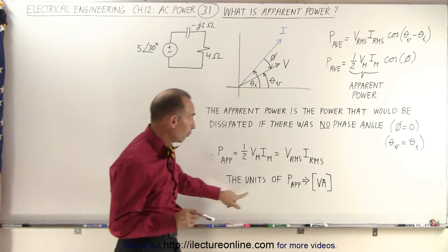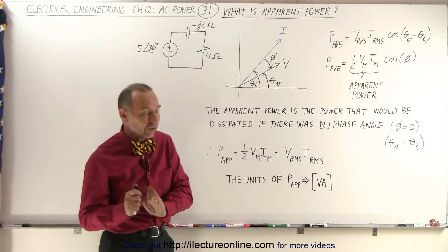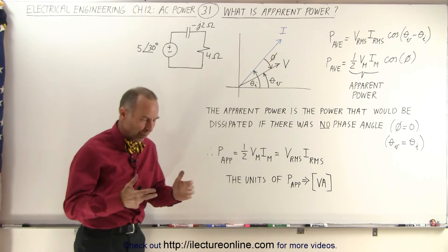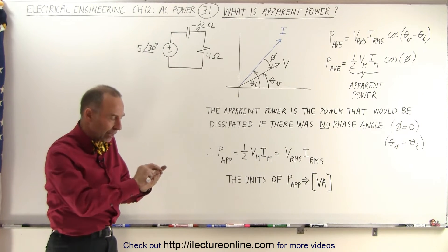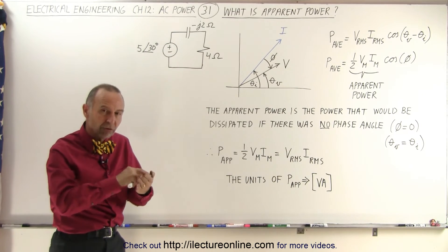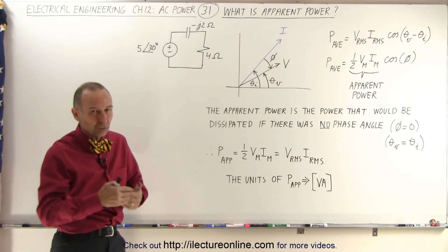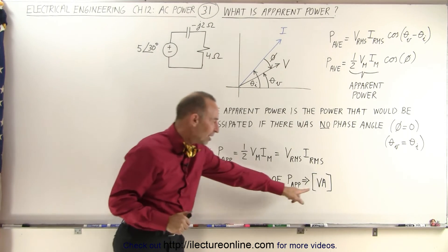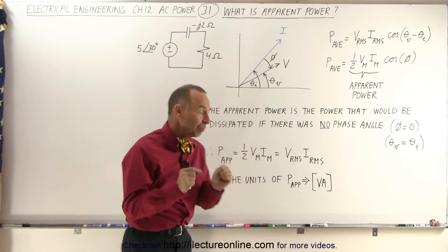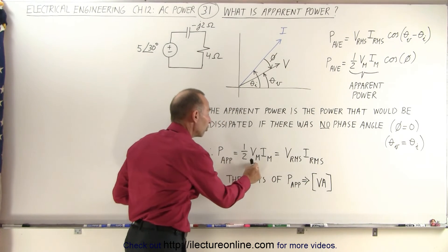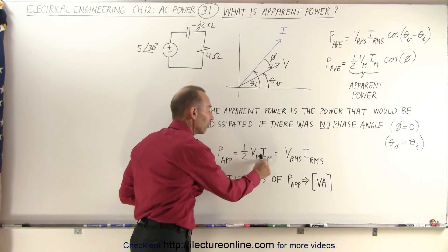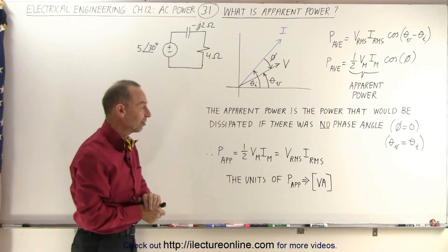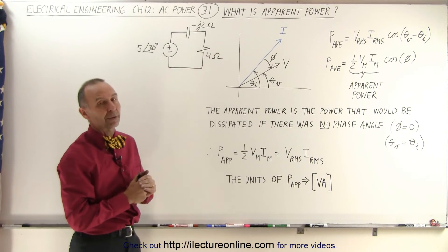The units for apparent power are not watts — they are volt-amperes. Sometimes when you look at an appliance, you can see the description of the current, the voltage, the hertz, and the frequency. Whenever you see V times A, they simply mean one-half the maximum voltage times the maximum current, and it does not consider the phase angle. This is what they call the apparent power.